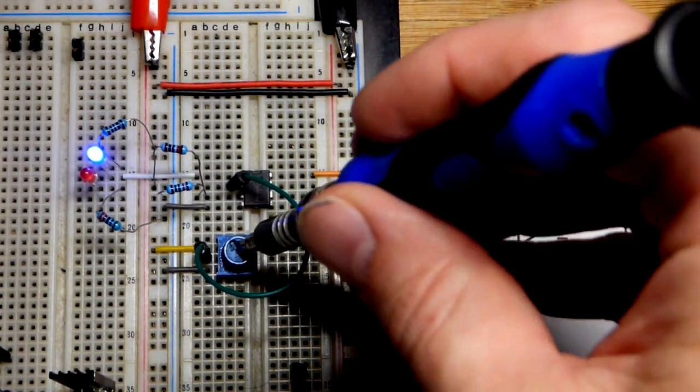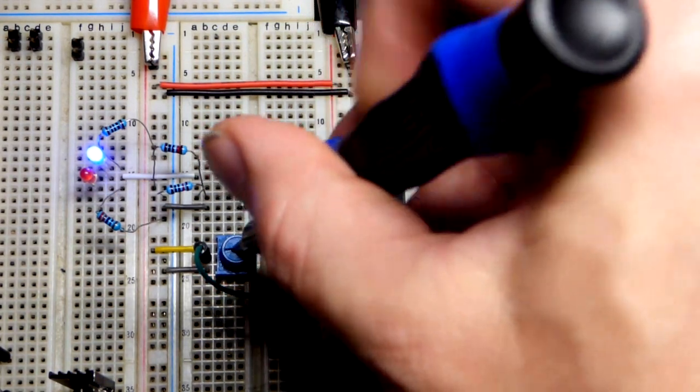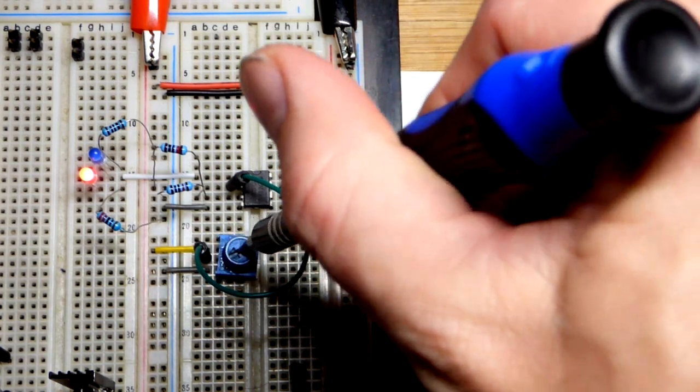Our trim pot here is our signal voltage. It is 5 volts and the output is low. If we lower the voltage below 2.5 volts, now we're at 0 volts, the output is high.